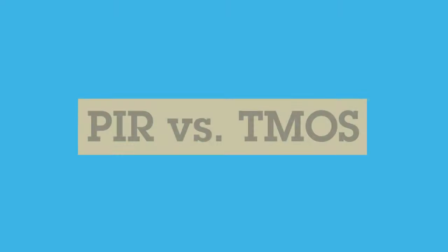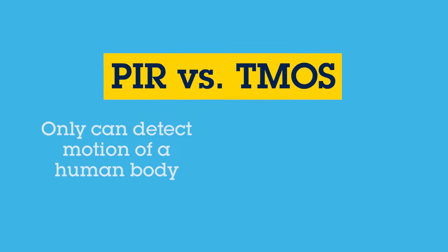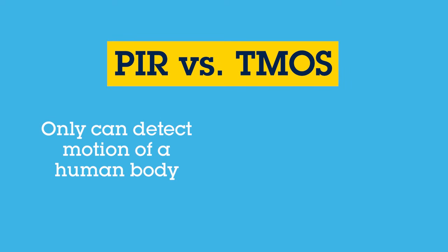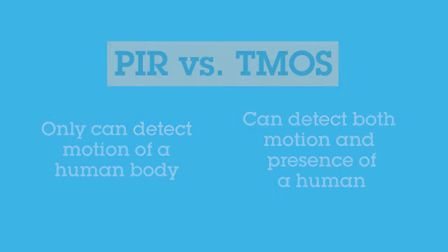Let's now compare the traditional motion sensing technology called PIR and ST's sensing technology of TMOS. PIR sensors only detect motion of a human body, while the TMOS IR sensor is capable of detecting both motion and presence of a human.